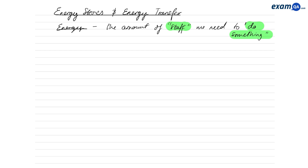This is a very vague definition, because energy is very hard to define in physics. But on the very basic level, it means the amount of stuff we need to do something. This refers to anything in the world — like walking, climbing, eating, anything.